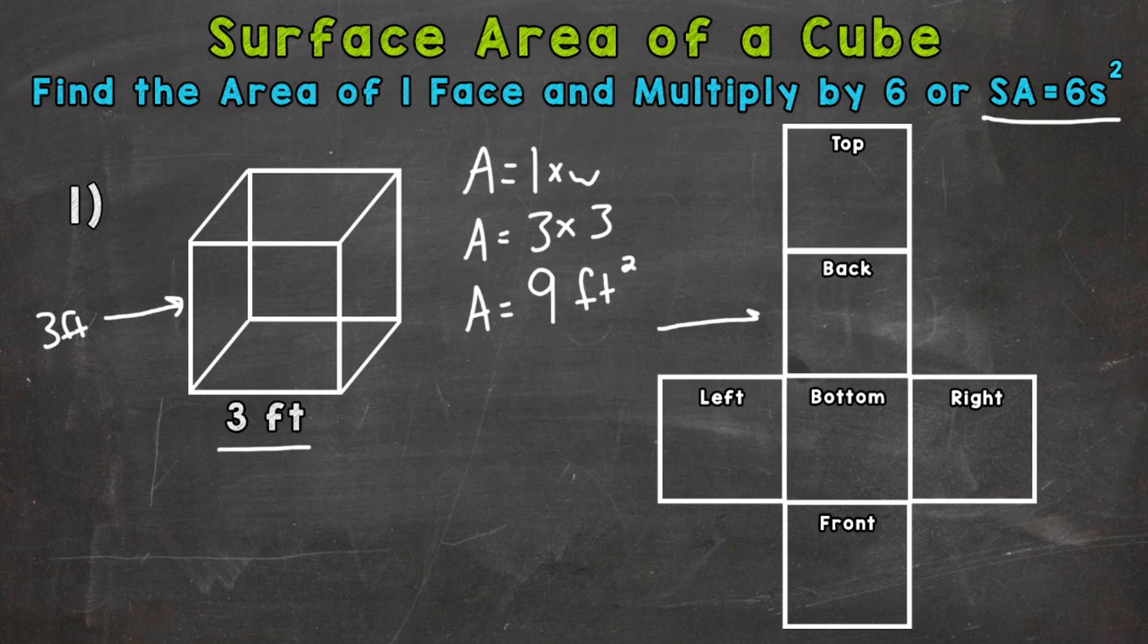So over here to the right, I laid out a net of that cube. A net is when you unfold a 3D figure, so we can kind of better visualize what we're doing here. So the front has an area of nine square feet. So we need to find the surface area, again, the area of all the faces. So we can think of it as all the faces having an area of nine square feet.